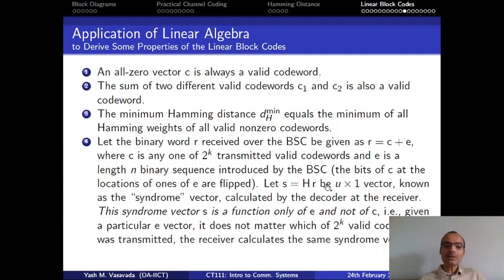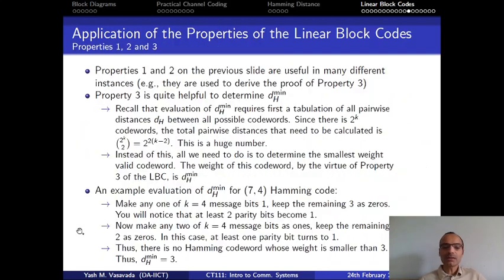Okay, so that is a long description before we can actually state the main property. And, the property says that the syndrome vector S is a function only of E and not of C. It does not matter what C is. Because, C can be any one of the total of 2 to the power K transmitted codewords. The specific value that the syndrome vector S takes is determined entirely by the value of E. So, that is this property number 4.